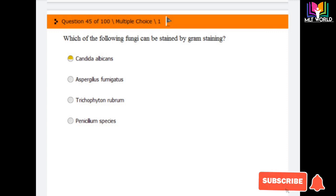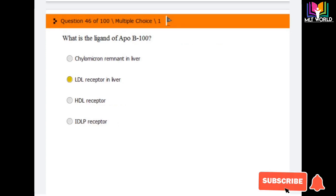Question number 45: Which of the following fungi can be stained by gram stain? Options are Candida albicans, Aspergillus fumigatus, Trichophyton rubrum, and Penicillium species. The answer is Candida albicans. Candida albicans is the type of fungi that can be stained by gram staining.